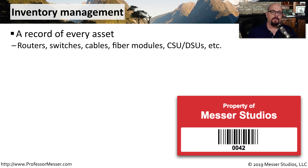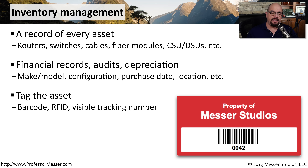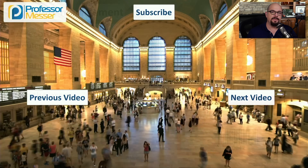It's very common for the Information Technology Department to keep track of all of the different technical assets in the organization. There's usually a tracking system that can track all of the switches, the routers, the computers, the monitors, and anything else relating to technology. These records will often document the make and the model of the component, where the component is located, when it was purchased, and other details about that particular component. This is often integrated with financial management software so the organization can properly depreciate the technology they've purchased. When a device is added to the database, it's common to add a tag to the device so that you can track that device no matter where it happens to go.